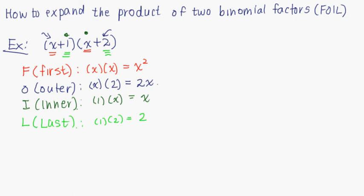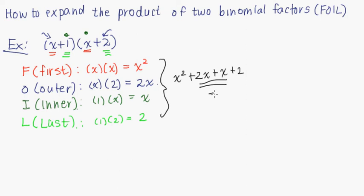Now we want to add all these terms together. So we have x squared plus 2x plus x plus 2. These two middle terms combine to become 3x, and the other terms stay the same, so we have x squared plus 3x plus 2. And this is the expanded version of x plus 1 times x plus 2.